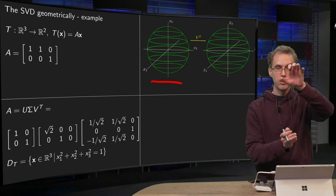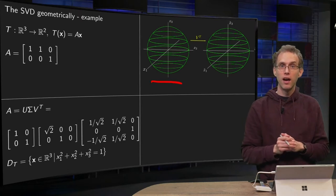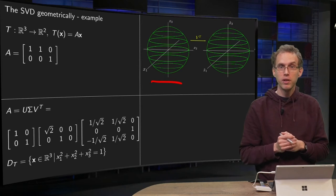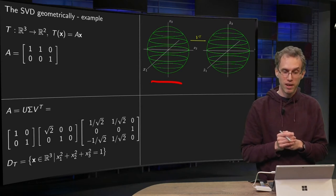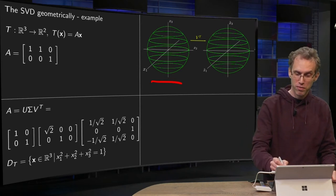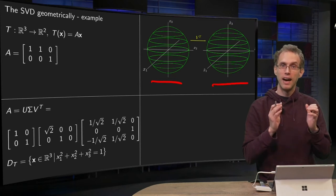Well, it is rotating the unit sphere twice around the origin, but if you rotate a unit sphere, nothing happens, so V^T leaves the unit sphere as it is.